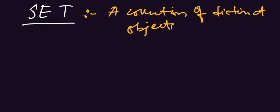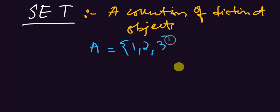What is a set? A set is a collection of distinct objects. Just like A = {1, 2, 3} — this is a collection. Collection means more than one object, and distinct also, because 1, 2, 3 are different from each other.